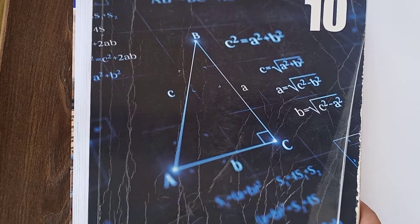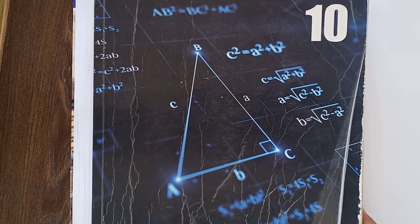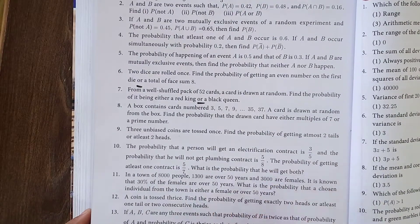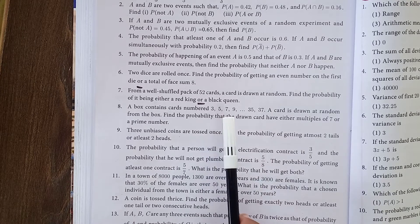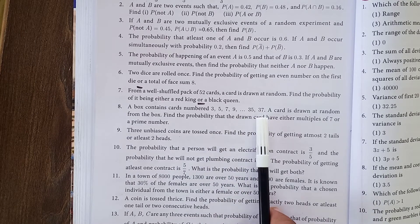Hi student, this is Sivakumar. 10th standard mathematics, chapter number 8, continuation of exercise 8.4. Now problem number 8. A box contains chords numbered 3, 5, 7, 9 up to 37.